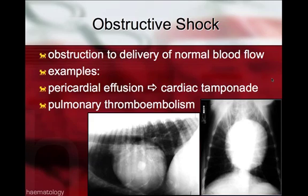Obstructive shock is a subset of cardiogenic shock where there is obstruction to delivery of normal blood flow. This is an example of a pericardial effusion with radiographs showing severe cardiomegaly. The pericardial effusion causes cardiac tamponade. Another example of obstructive shock could theoretically be pulmonary thromboembolism.